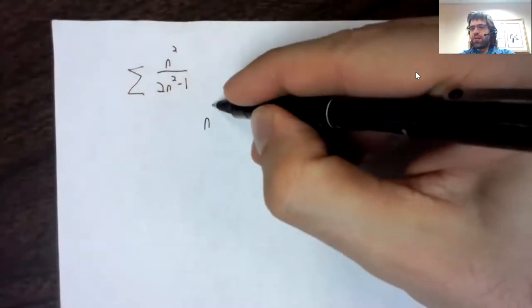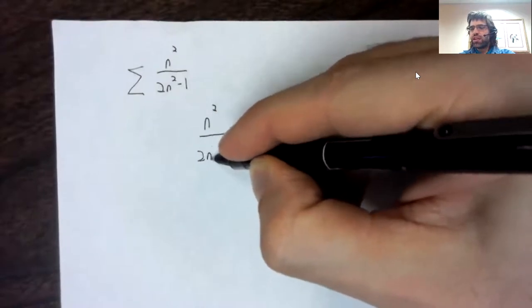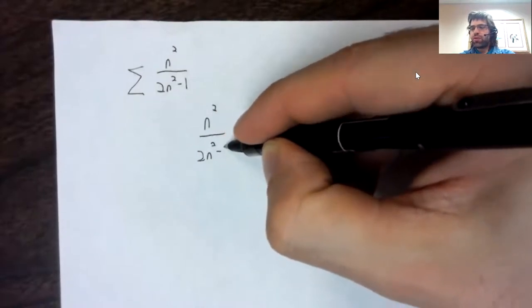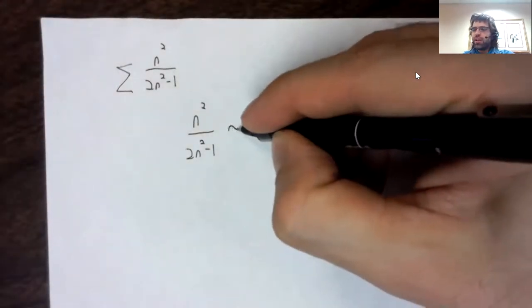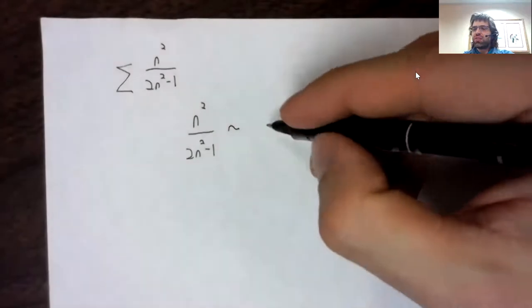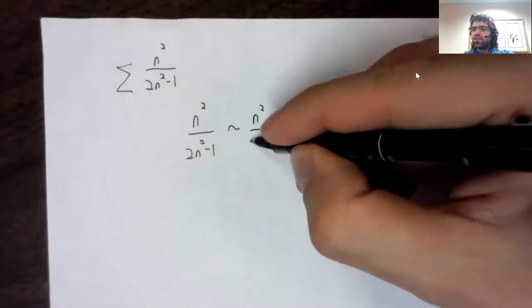So what I think is that n squared over 2n squared minus one is basically the same as n squared.